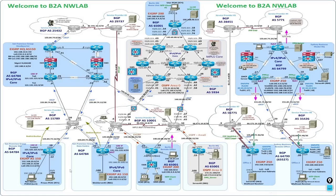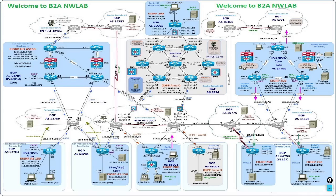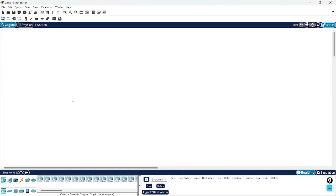Hello all, so today I will show you a physical lab in Cisco Packet Tracer. I am just opening Cisco Packet Tracer, it will take a minute. So if you see here there are two types: one is the logical and there is the physical. Yesterday I already did the logical lab, so right now today I am going to do a physical lab.